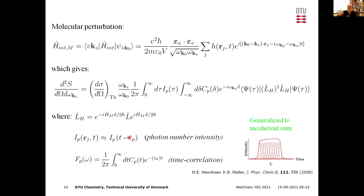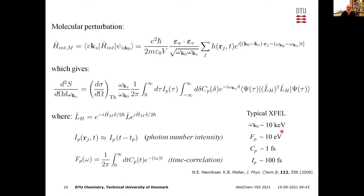We also made the approximation that all electrons feel the same time envelope of the photon pulse, since the pulse is much broader than the molecule. The coherence function is related to the frequency distribution of the field — time and energy are Fourier transforms of each other — and it's the coherence length of the field that determines the frequency distribution. Typical XFEL parameters: ~10 keV photon energy, ~10 eV energy spread, ~1 fs coherence time, ~100 fs pulse duration.